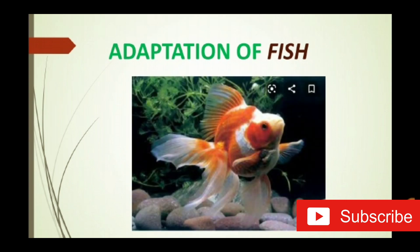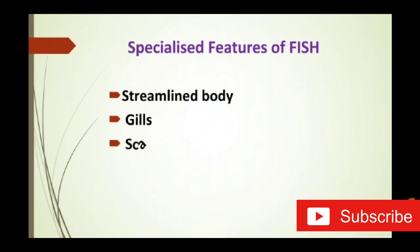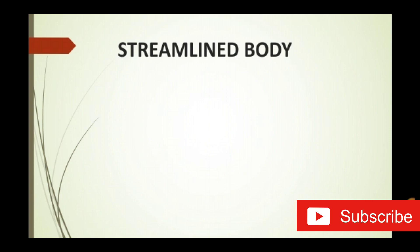So simply, the specialized features of an animal are known as adaptation. Next we learn about adaptation of fish. Fish lives in both freshwater and marine water, that is seawater. How does the fish live in water, how does it breathe in water, and how does it swim? Let us explain the specialized features of fish. First one is the streamlined body, second one is gills, third one scales, fourth one is fins, and fifth one is tail.